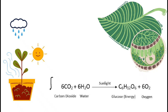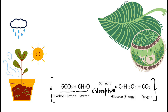We have seen the photosynthesis reaction so many times, but do we really know the basics? This reaction is a redox reaction. Plants utilize carbon dioxide and water in the presence of sunlight and chlorophyll — a green pigment found in green plants — to produce glucose, an energy molecule that is later stored as starch or used directly, and oxygen is released.